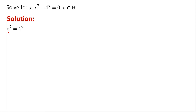If x is less than 0, then the left-hand side of the equation is less than 0. The right-hand side of the equation is greater than 0. So, x cannot be less than 0. Therefore, x must be greater than 0.